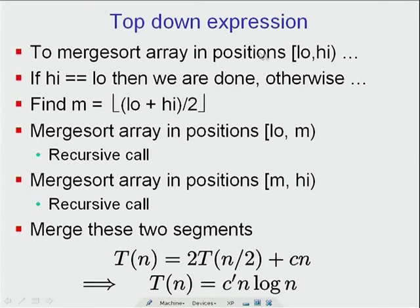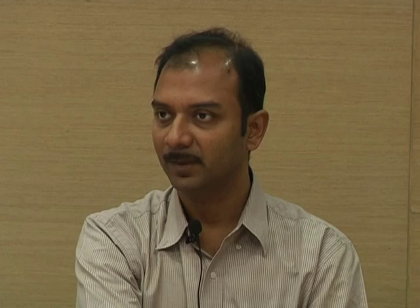So even the top-down expression results in the same algorithm and the same computation order. Expressing it this way is much more powerful. Instead of messing around with indices and deciding where runs begin and end, we just divide in half approximately, recursively invoke merge sort on the two halves, and zip things together at the end. We will study this in more detail once we understand recursive function calls.